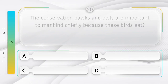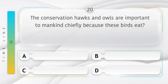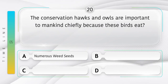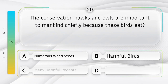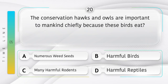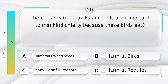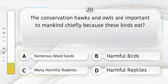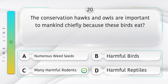The conservation of hawks and owls is important to mankind chiefly because these birds eat — options: A) Numerous wheat seeds, B) Harmful birds, C) Many harmful rodents, D) Harmful reptiles. The answer is option C, many harmful rodents.